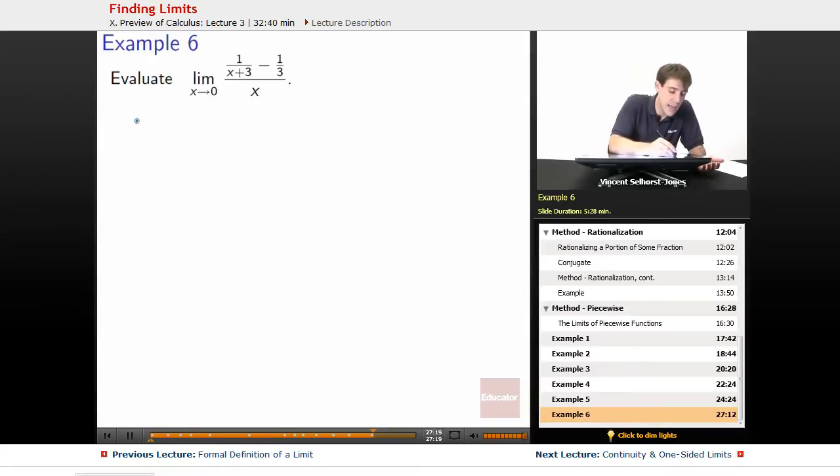First question we ask ourselves is, is it a normal function? Well, yeah, you can guess by my hint of no. If we plugged in 0, 1 over 3 minus 1 over 3, 0 on top, divided by 0 on bottom. No, definitely not normal.